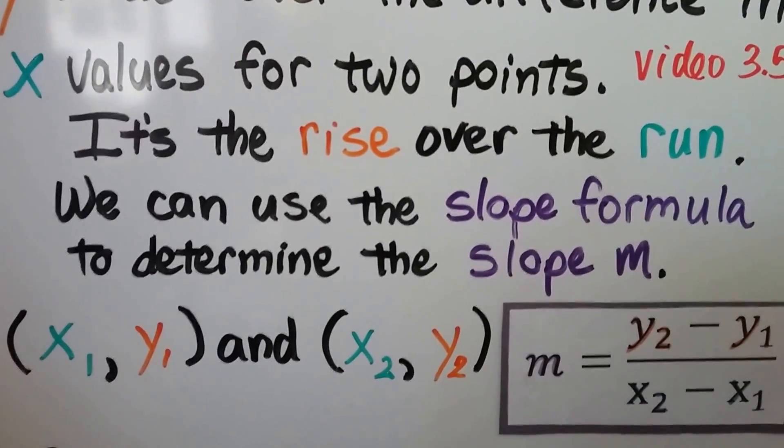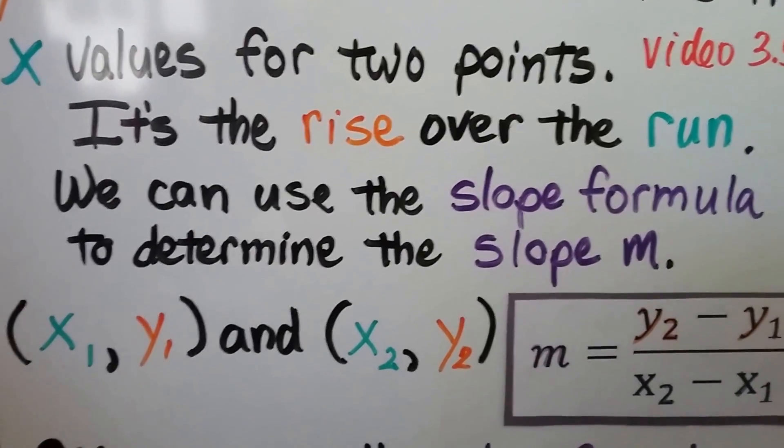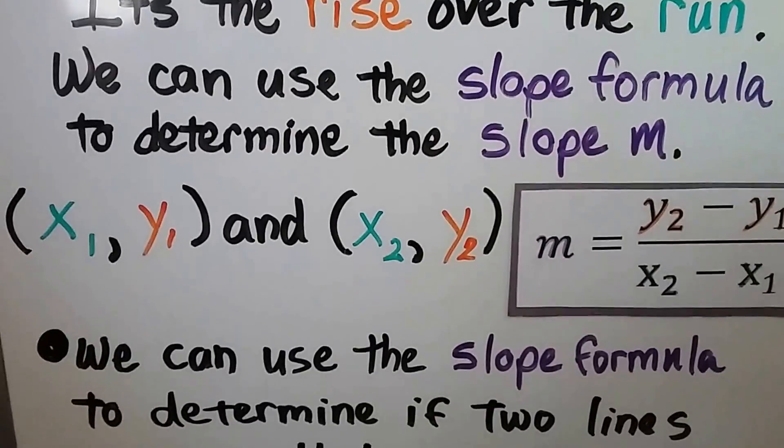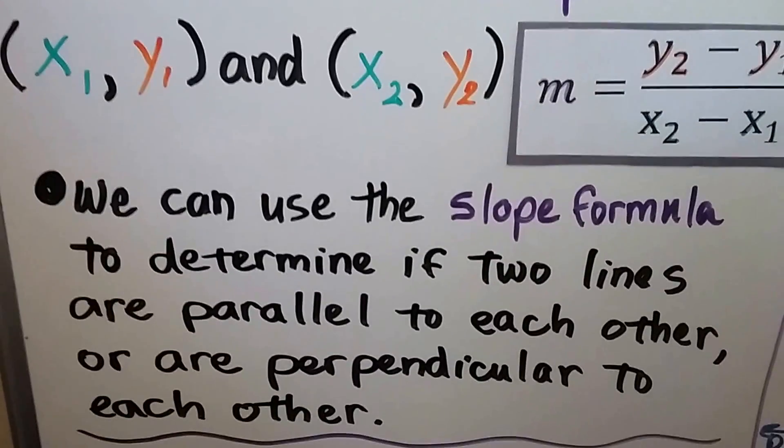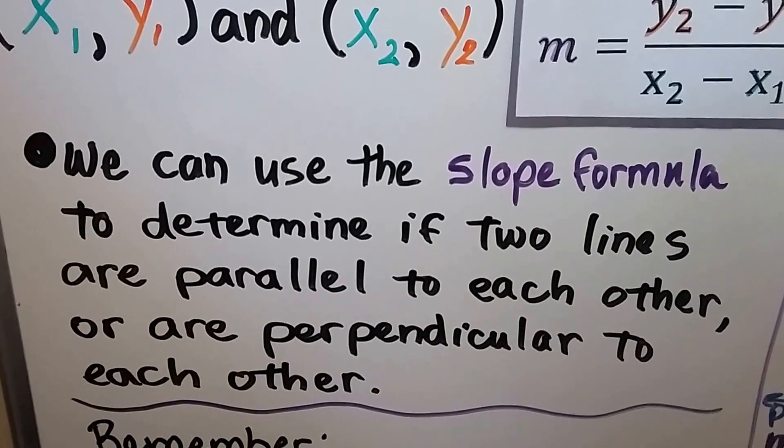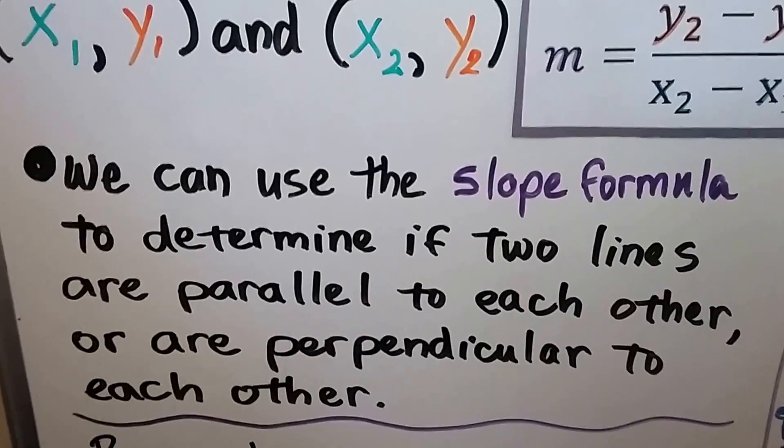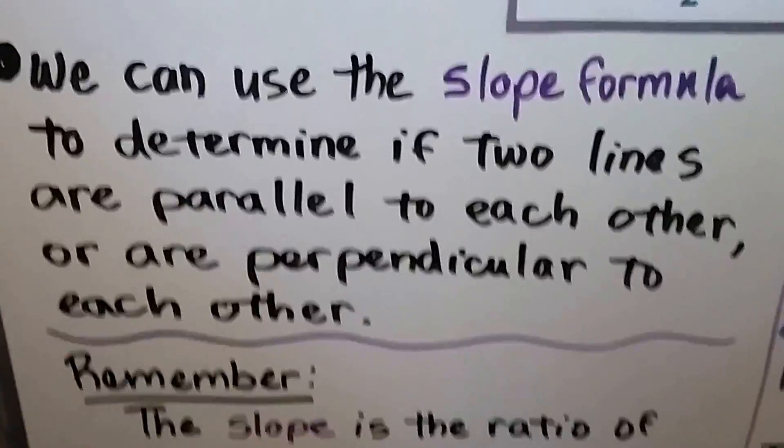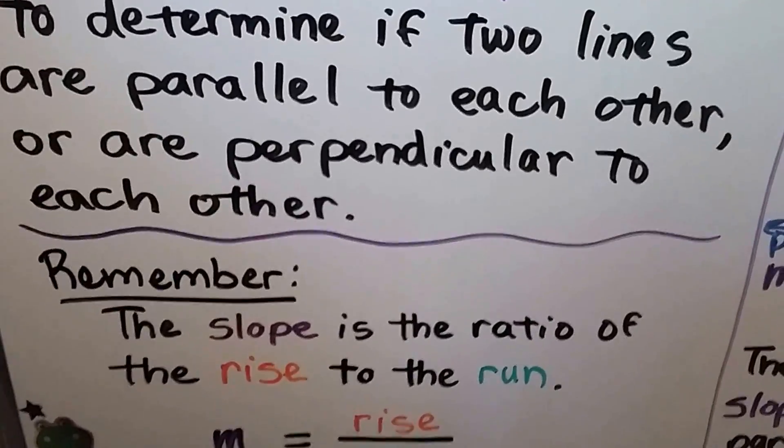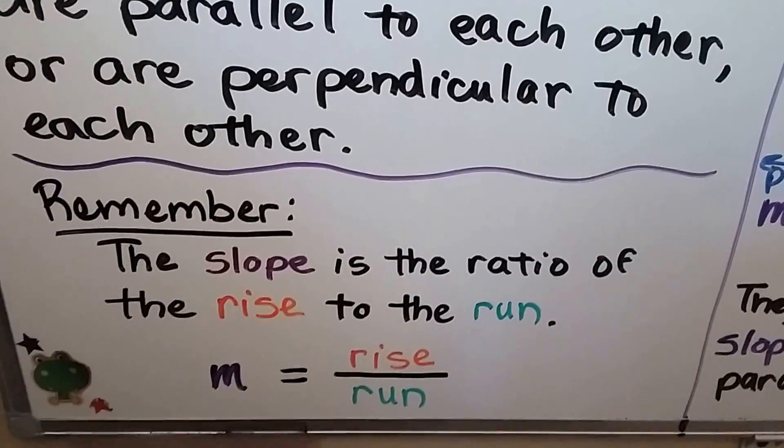We substitute them into this formula and we can find the slope. m represents the slope. We can use the slope formula to determine if two lines are parallel to each other or are perpendicular to each other. Remember, the slope is the ratio of the rise to the run.